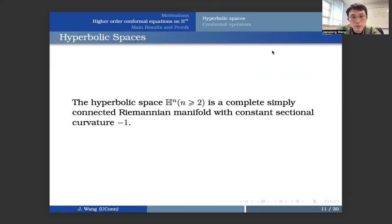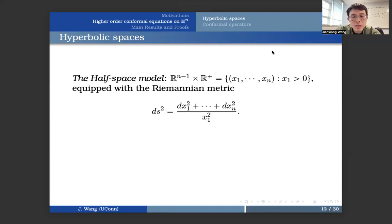So the hyperbolic space is basically a complete simply connected Riemannian manifold with constant sectional curvature minus 1, and it is one of the most important models of non-Euclidean spaces. And there are many equivalent models to describe the hyperbolic space. Here we have the half-space model, which is given by Rn minus 1 times R positive, equipped with this Riemannian metric: ds squared equals dx squared over x1 squared. Here, x1 is from R plus, x1 is positive.